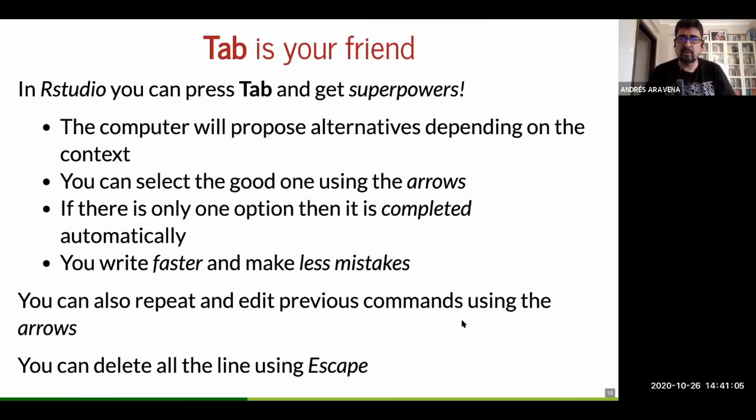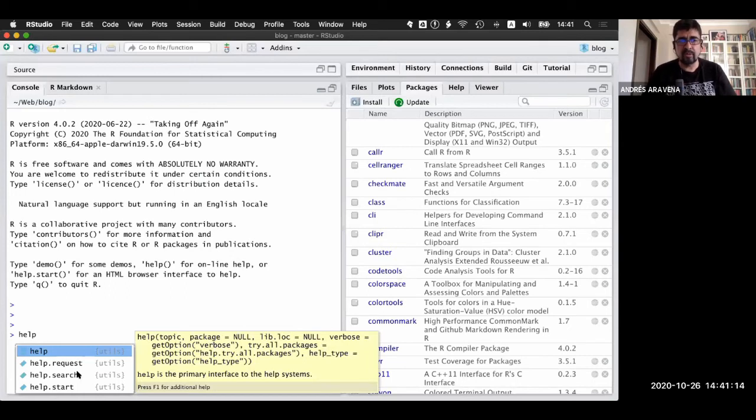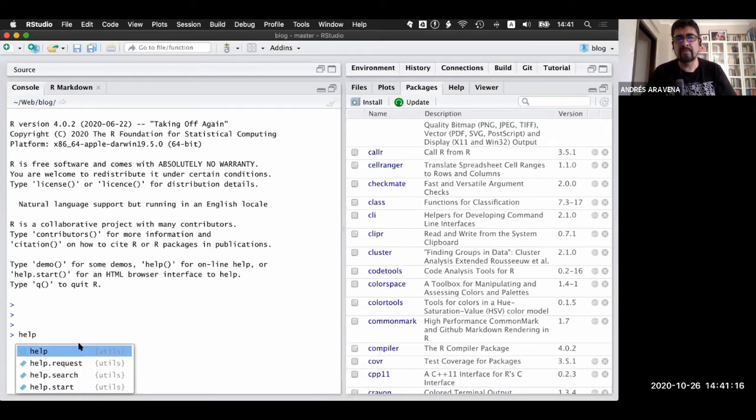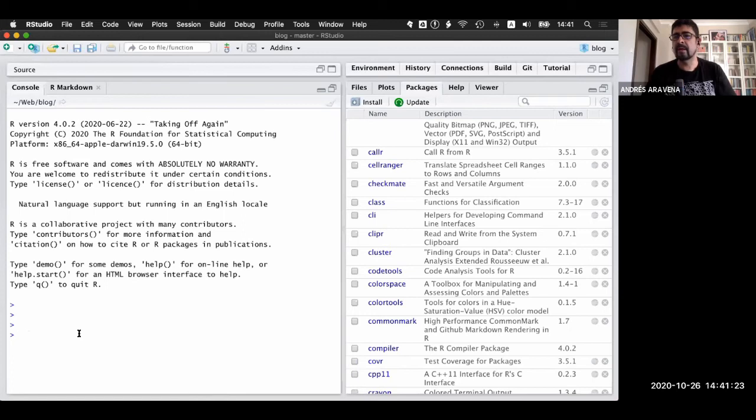And there is another key in the top corner called escape. And that is used to cancel what you are writing. For example, if I am writing something, let's say help. And you see it showed me all the options, the different kinds of help. And if I change my mind, I press escape and I came back.